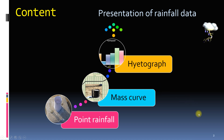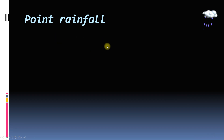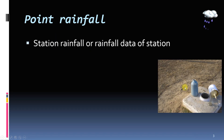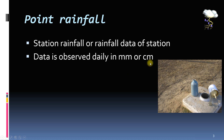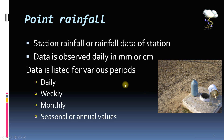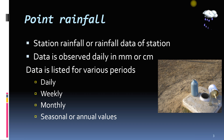Station rainfall is also called point rainfall. The rainfall data is observed daily in millimetres or centimetres. This is a non-recording rain gauge. Rainwater is collected in this bottle. We can convert the volume of water collected in this bottle to millimetres using this calibrated jar. All of this has been explained in an earlier video, the link for which is given in the top right corner of your screen as well as in the description of this video.